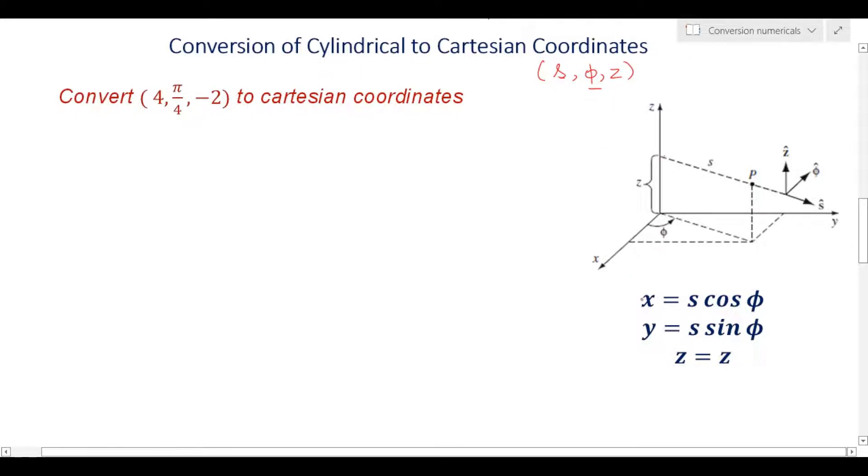There are some transformation equations or conversion equations, and we have derived these in the last video, so you can check. These are the transformation equations: when your s, phi, and z are given and you have to find the points in Cartesian, means you have to find x, y, and z. The question here is similar, where the points are given in s, phi, and z and you have to find the points in Cartesian system. You have to go from s, phi, z to x, y, z.